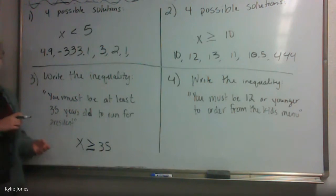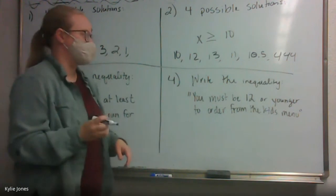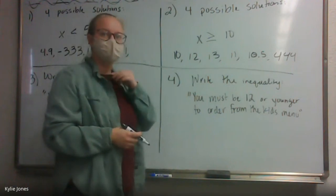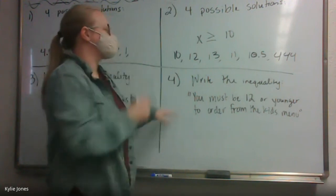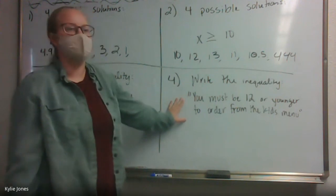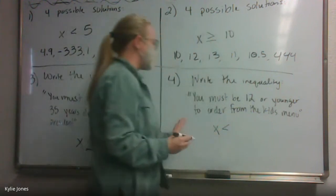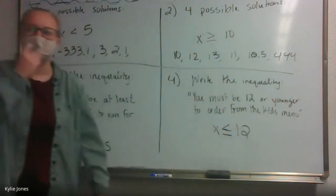So your age can be exactly 35, which is the equal-to part, or greater than 35. It doesn't matter your age as long as you are greater than or equal to 35 years old. We've got some old presidents right now — Trump is in his 70s and Joe Biden is in his late 70s. Anyway, our next one — you must be 12 or younger to order from the kids menu. If I am 13, can I order? No. So your age must be less than or equal to 12. Can you be exactly 12? Yes, you can.